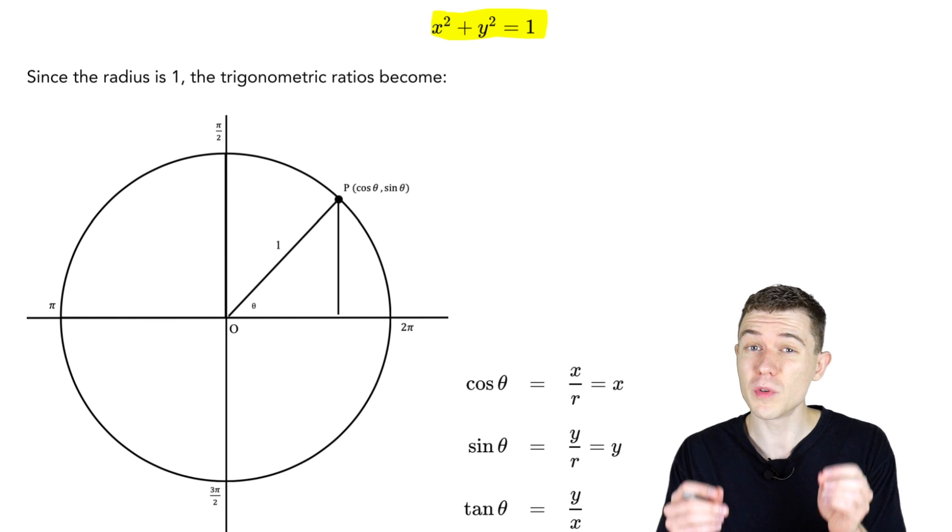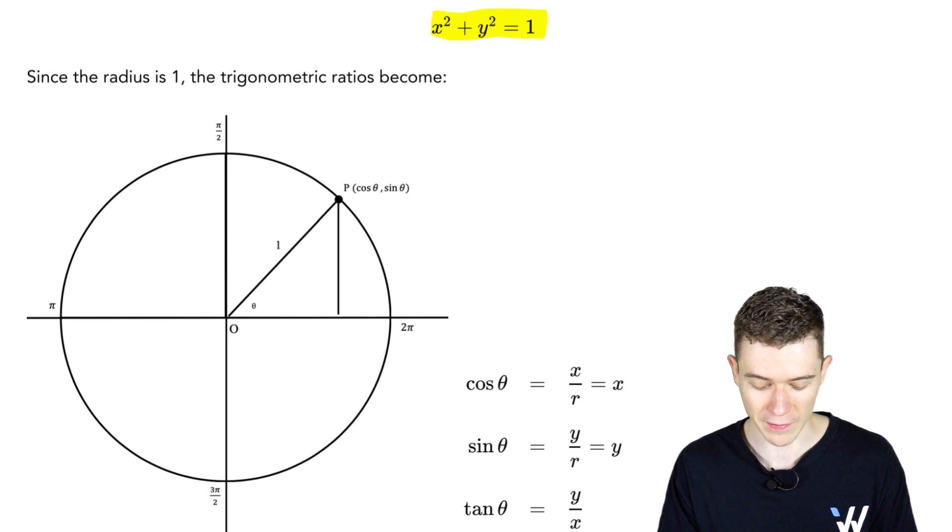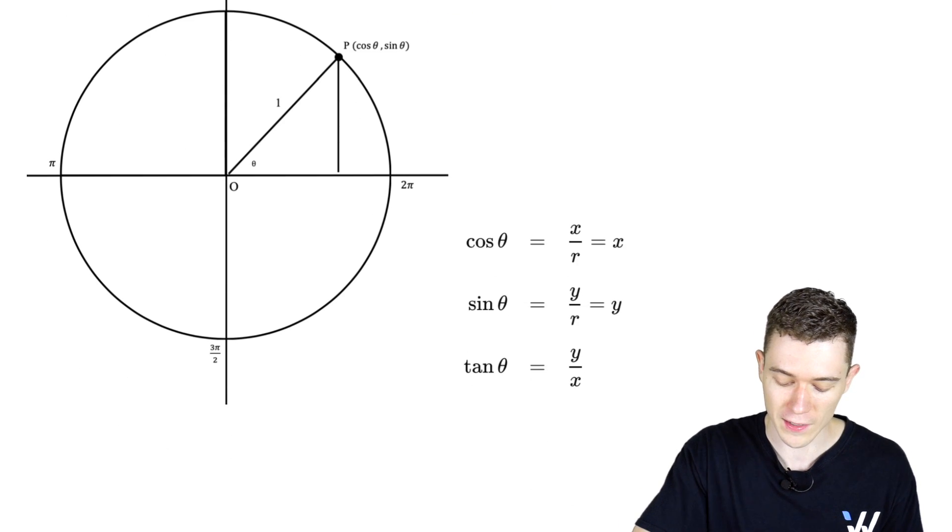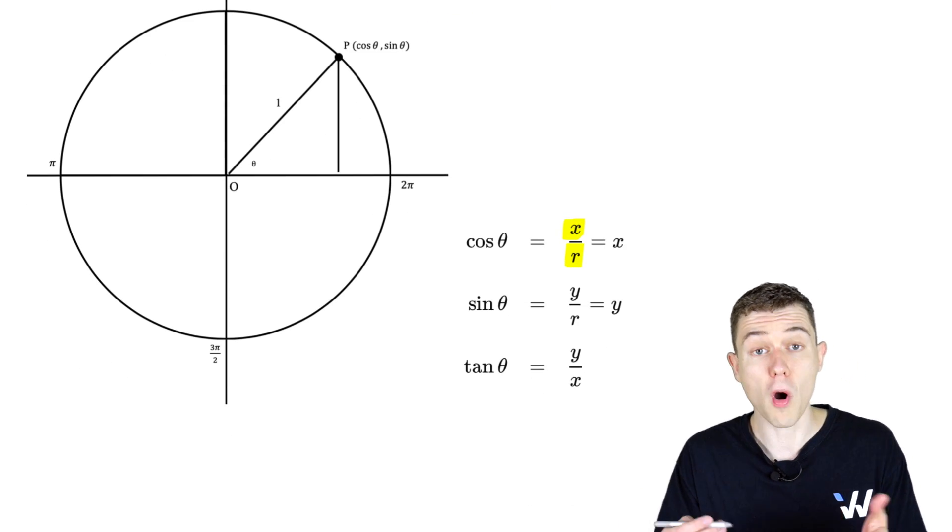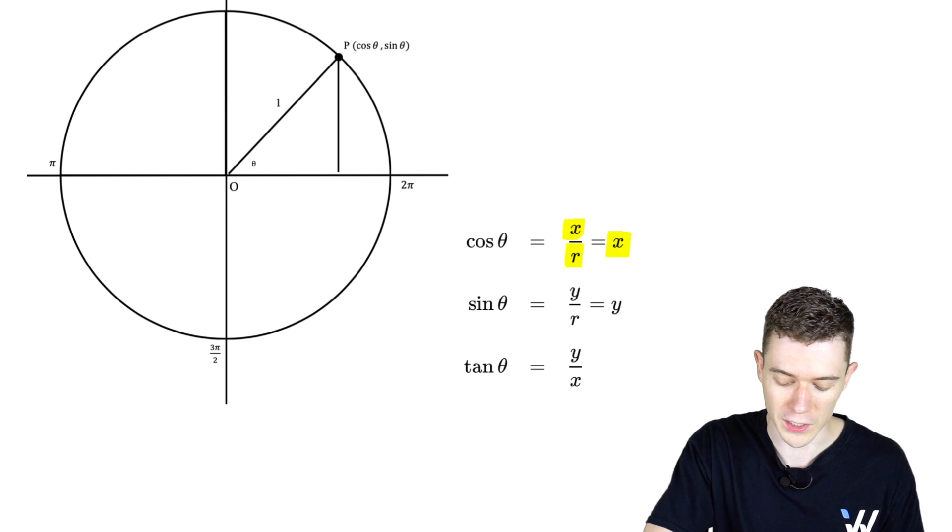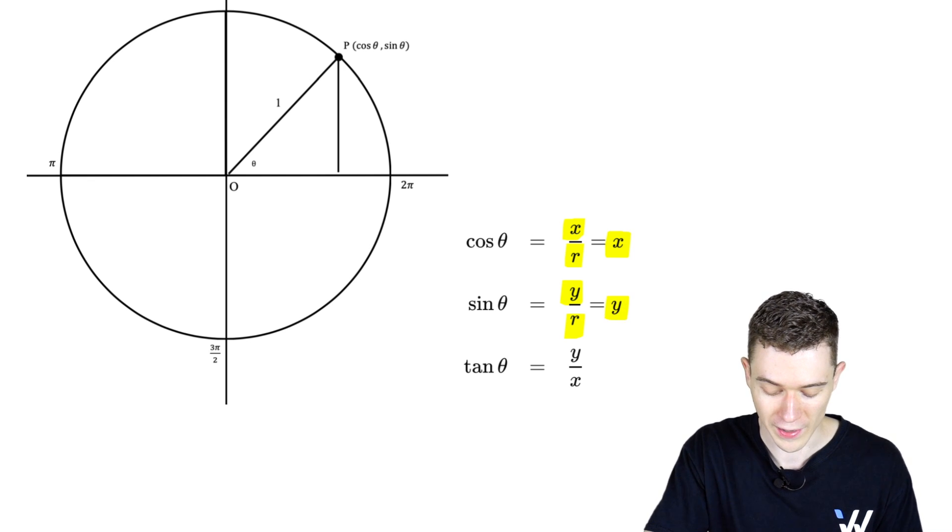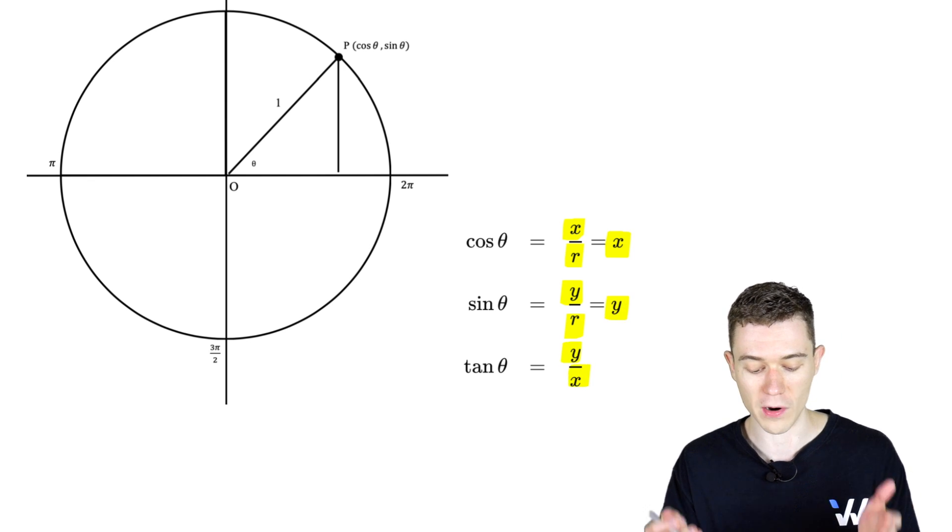This lets us reduce those equations of our trig functions to easy values. Remember that cosine of theta is x over r? But here r is 1, so we reduce to just x. Sine is y over r. Again, r is 1. This reduces to just y. Tangent is still y over x.